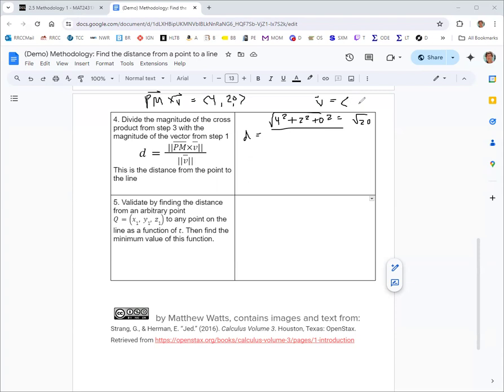The denominator is the magnitude of v. V was figured out in step 1 from the equation of the line: <-1, 2, 3>. Its magnitude is square root of 14. So that's the exact distance, square root of 20 over square root of 14, which you could write as square root of 10 over 7. If you need to approximate it, you should get about 1.195.